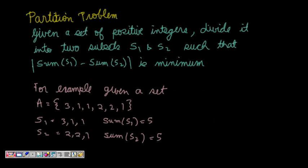Our question is the partitioning problem. Given a set of positive integers, divide the set into two subsets S1 and S2 — which might have different numbers of elements — such that the difference between the sum of S1 and the sum of S2 is minimum. This is basically an optimization problem: partition a set into two subsets so that the difference in their sums is minimum.